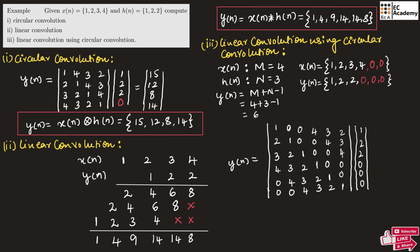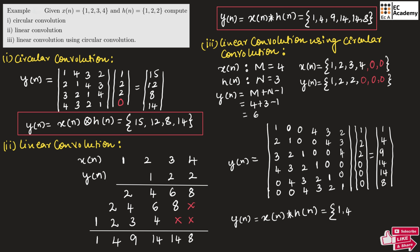Multiplying these two matrices we get 1, 4, 9, 14, 14, and 8. So the linear convolution of x of n and h of n using the circular convolution method gives the sequence 1, 4, 9, 14, 14, and 8.